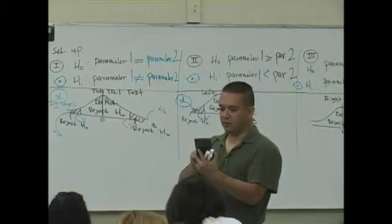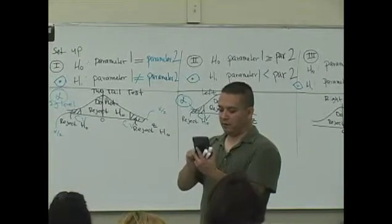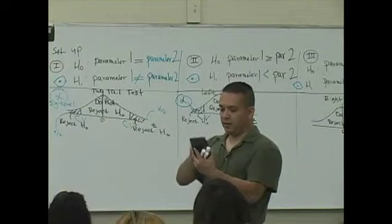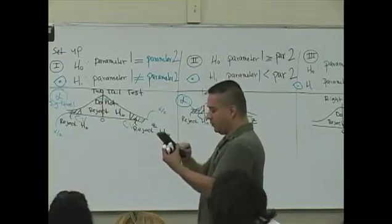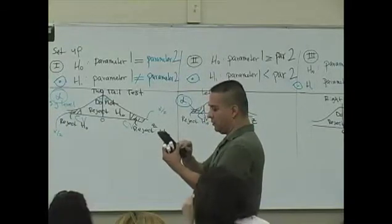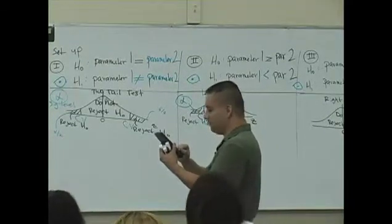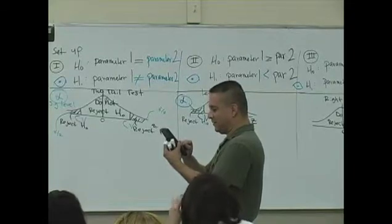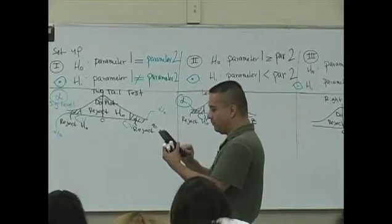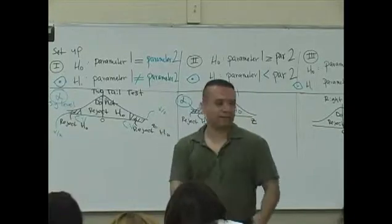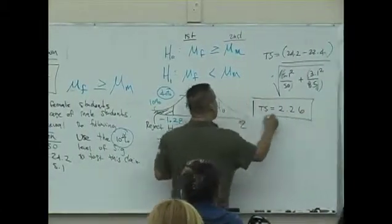Let me do this. 24.2 minus 22.4 divided by 2.26. 2.2 minus 22.2 minus 22.5 divided by 85. I've got 2.26.